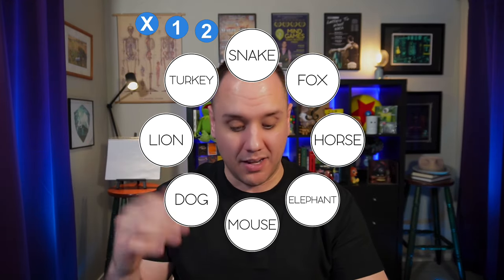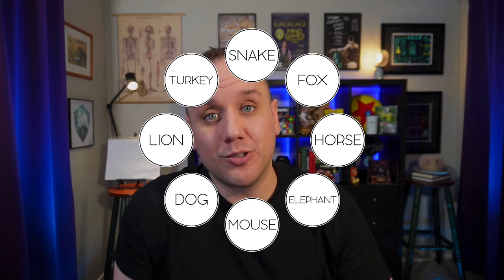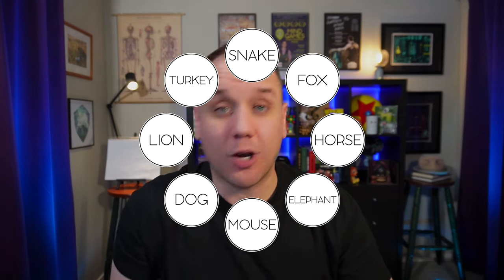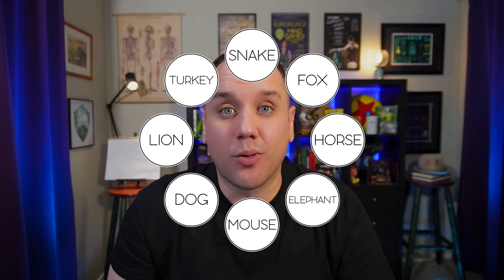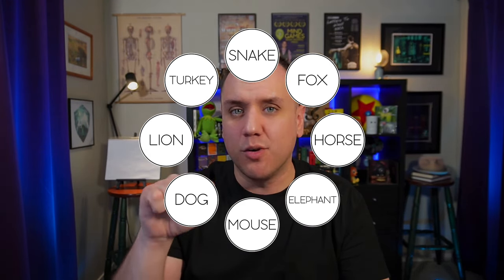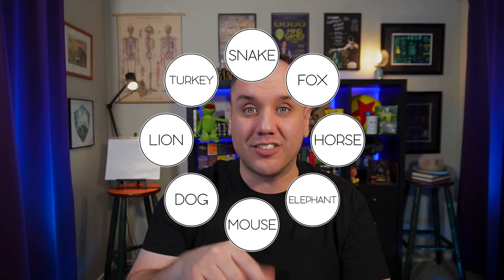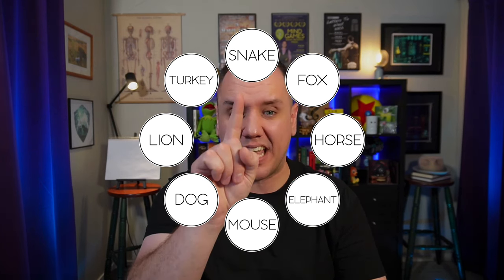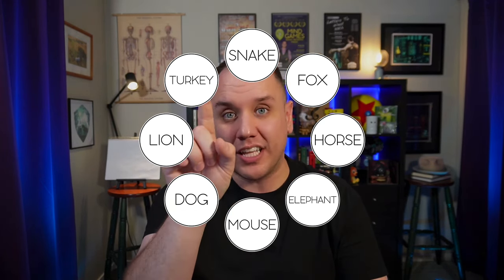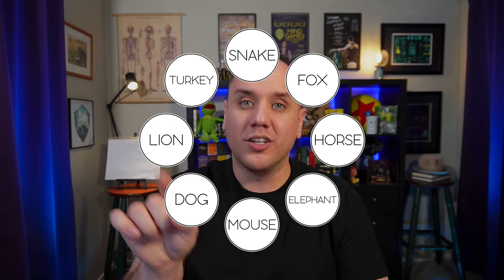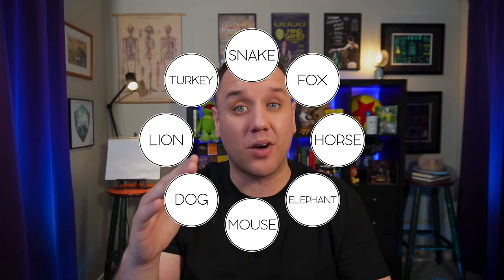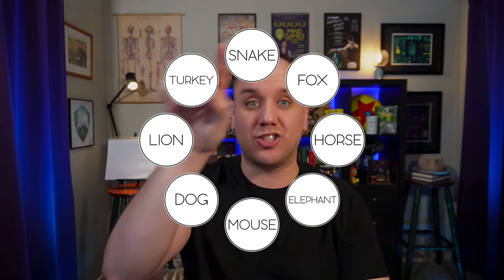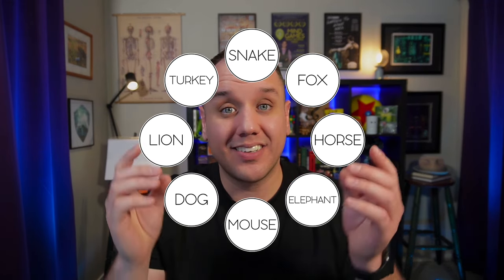So that means we can get rid of those little blue circles at the top. You should be on one of these animals. Whichever animal you are on, you are going to count to your number again, but this time moving in the opposite direction. So for example, if you landed on snake and your number is 5, turkey is 1, lion is 2, dog is 3, and so on. And you're going to count to your number again in this direction. And I want you to do it now.